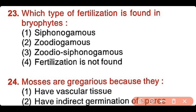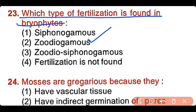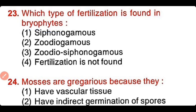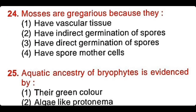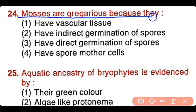Question number 23: Which type of fertilization is found in bryophytes? Siphonogamy, zoidogamy, zoidogamy/siphonogamy, or fertilization is not found. The correct answer is option 2 — zoidogamy is the type of fertilization present in bryophytes. Question number 24: Mosses are gregarious because they have vascular tissue, they have indirect germination of spores, they have direct germination of spores, or they have spore mother cells. The correct answer is option 2. Mosses are gregarious because they have indirect germination of spores.